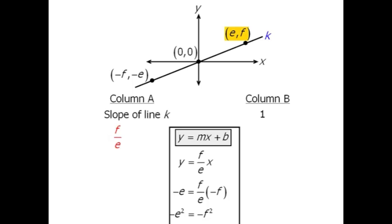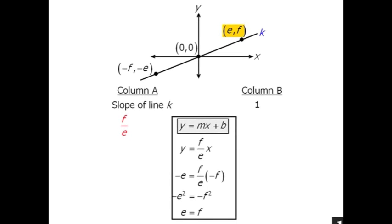Now since this point, ef, lies in the first quadrant, we know that e and f are both positive. So from this, we can conclude that e must equal f.